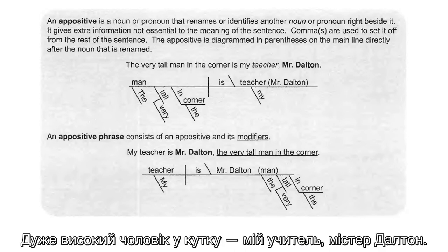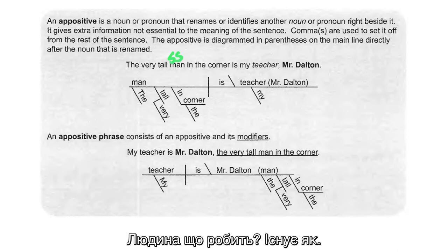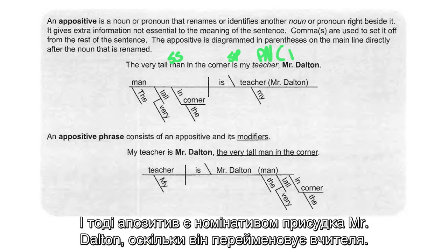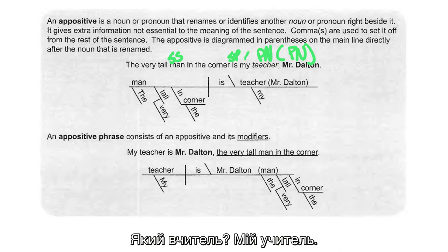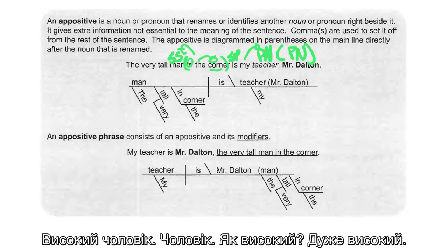Let's take a look at this one: 'The very tall man in the corner is my teacher, Mr. Dalton.' Who or what is this about? It's about man. Man does what? Exists as. Exists as what? Teacher — that's a predicate nominative. And then the appositive is Mr. Dalton, because that renames teacher. Which teacher? My teacher. In the corner is a prepositional phrase modifying man. Tall man. The man.